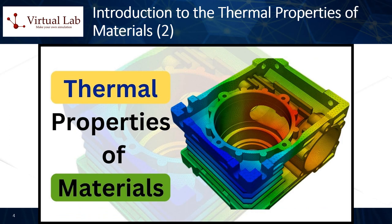4. Thermal expansion, beta. When materials are heated, they tend to expand; this is known as thermal expansion. The rate of expansion is quantified by the material's coefficient of thermal expansion, usually denoted by the Greek letter beta or alpha, not to be confused with thermal diffusivity. It is typically measured in units of per degree Celsius or per Kelvin (1/°C or 1/K). Materials with high thermal expansion coefficients expand more for a given increase in temperature than those with low coefficients.